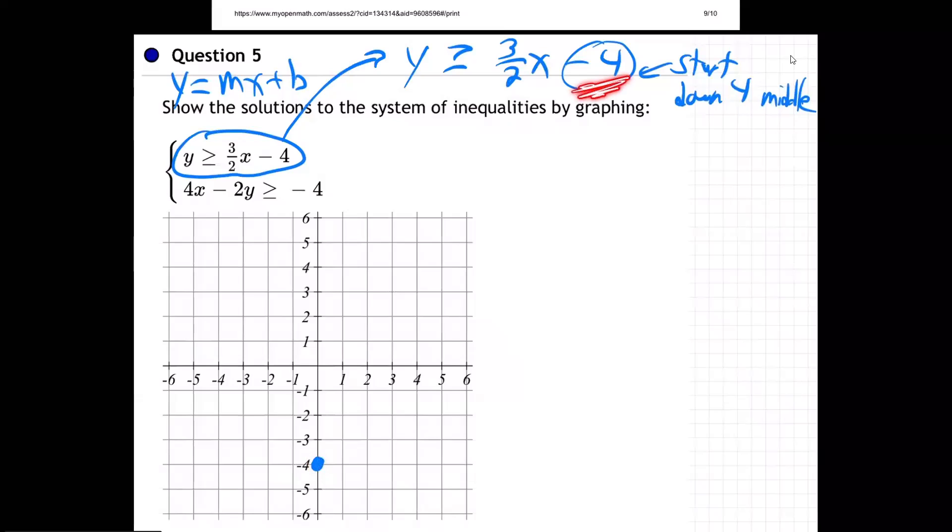So this is going to be right here at negative 4. You seeing that? Start down 4 in the middle, right there. That's your first dot. So whatever's off to the right, that's your first dot, and it's right on the middle line. It's not sideways, it's not back 4, it's down 4 in the middle line.